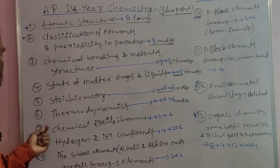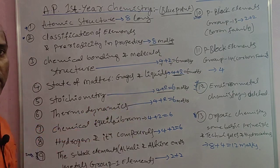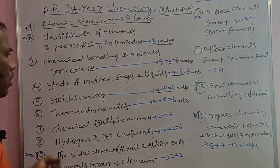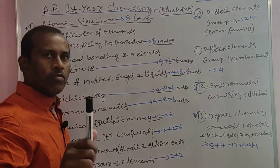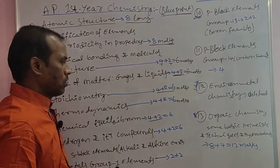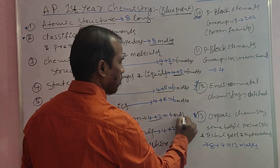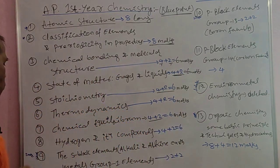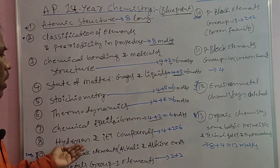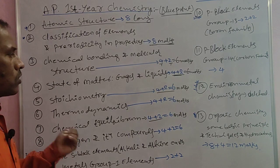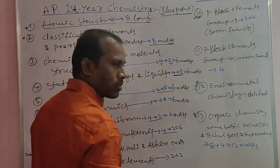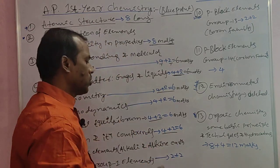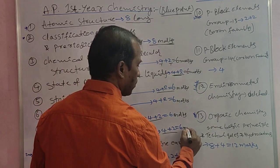The sixth topic Thermodynamics has one short answer and one very short answer. The seventh topic is Chemical Equilibrium, which also carries 6 marks — one short answer and one very short answer, totaling 6 marks. The eighth topic is Hydrogen and Its Compounds, also 6 marks, with one short answer and one very short answer.